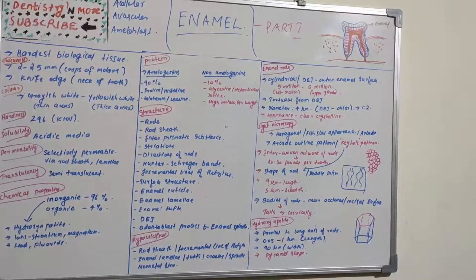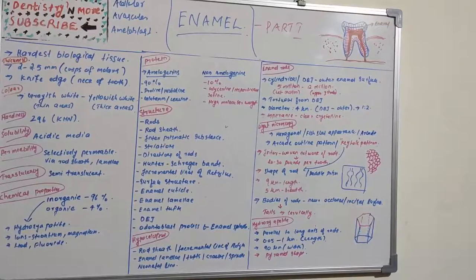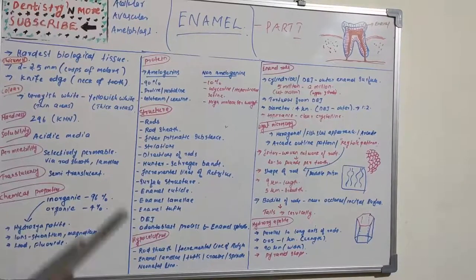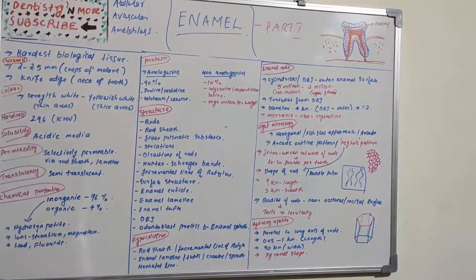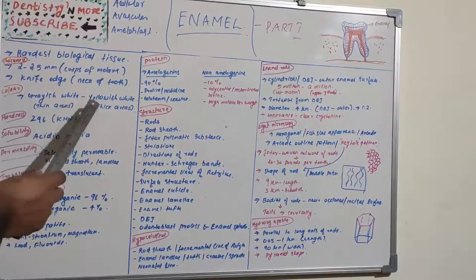Regarding physical properties: thickness is 2.5 mm at the cusp of molars and premolars, 2 mm at the incisal edge, and knife-edge thickness at the cervical region. It is thicker at the maxillary lingual surface of molars and mandibular buccal surfaces. Color depends on thickness and translucency, ranging from grayish white to yellowish white — yellowish at thin areas and grayish at thick opaque enamel.